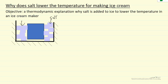We have a container of starting materials to make ice cream. What happens is that there's some liquid on the surface of the ice cubes, so the salt is going to dissolve in that liquid. Once salt dissolves in the liquid, we can look at the fugacity of the water in the liquid phase — and because it has salt, it's lower than the fugacity of water in the ice.